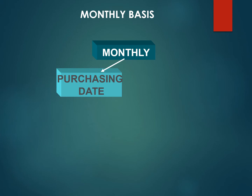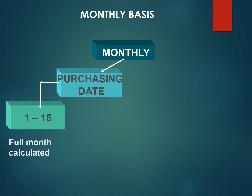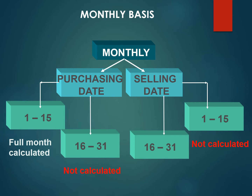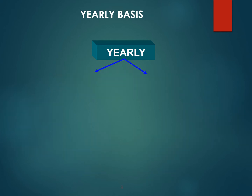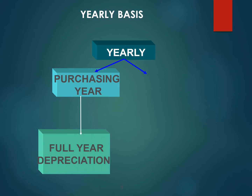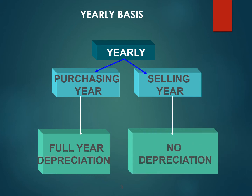If we purchase a fixed asset on any date from 1st to 15th of that particular month, we claim one month's depreciation. If we sell the fixed asset from the 16th until the 31st, the full month depreciation is also claimed in that month. In yearly basis, we declare the full depreciation amount in the purchase year regardless of the date and month, and there is no depreciation declared in the selling year.